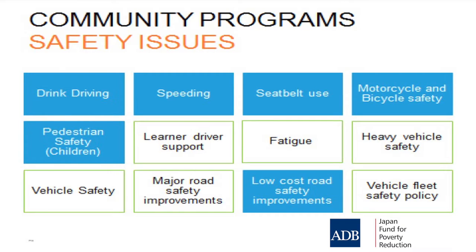What are the issues that community programs can work on? I've got six that I think are effective, coloured blue on the matrix. Community programs can have an influence on drink driving, speeding in the local environment, local seatbelt and restraint use, motorcycle and bicycle safety, children's pedestrian safety and pedestrian safety generally — particularly in shopping areas where vehicle speeds need to be low. They can also influence where low-cost road safety improvements are allocated, such as identifying the most risky spots to put a road crossing for pedestrians or a curb extension that reduces the width of the road.